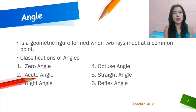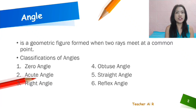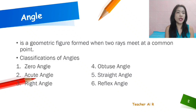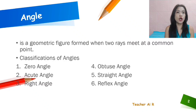And we have some classification of angles, such as the zero angle, the acute angle, right angle, obtuse angle, straight angle, and reflex angle. Those are the kinds or the classification of angles.